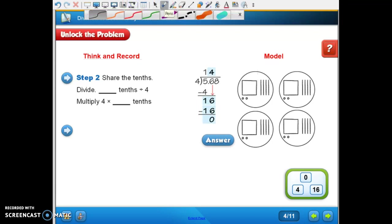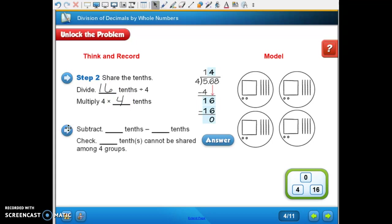So this says, divide 16 tenths divided by four, multiply four times four tenths.